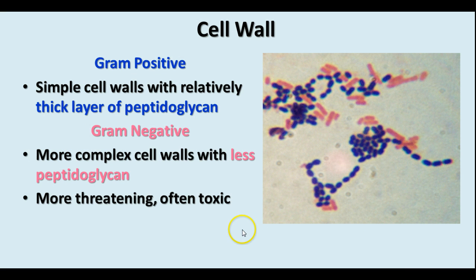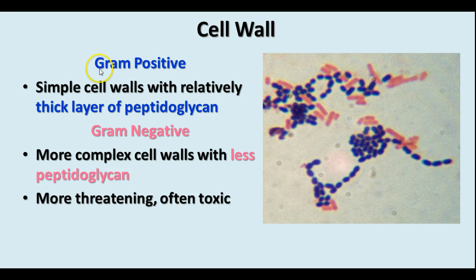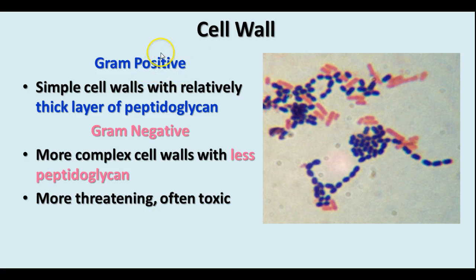Cell walls come in two basic kinds in the domain bacteria: gram positive and gram negative. The gram positive ones stain blue or purple — they have simple cell walls with a relatively thick layer of peptidoglycan. The gram negative ones have a more complex cell wall with less peptidoglycan and stain pink. Both can be harmful; gram negative ones are often more toxic, but gram positive ones include staph and strep, which can also be very harmful.